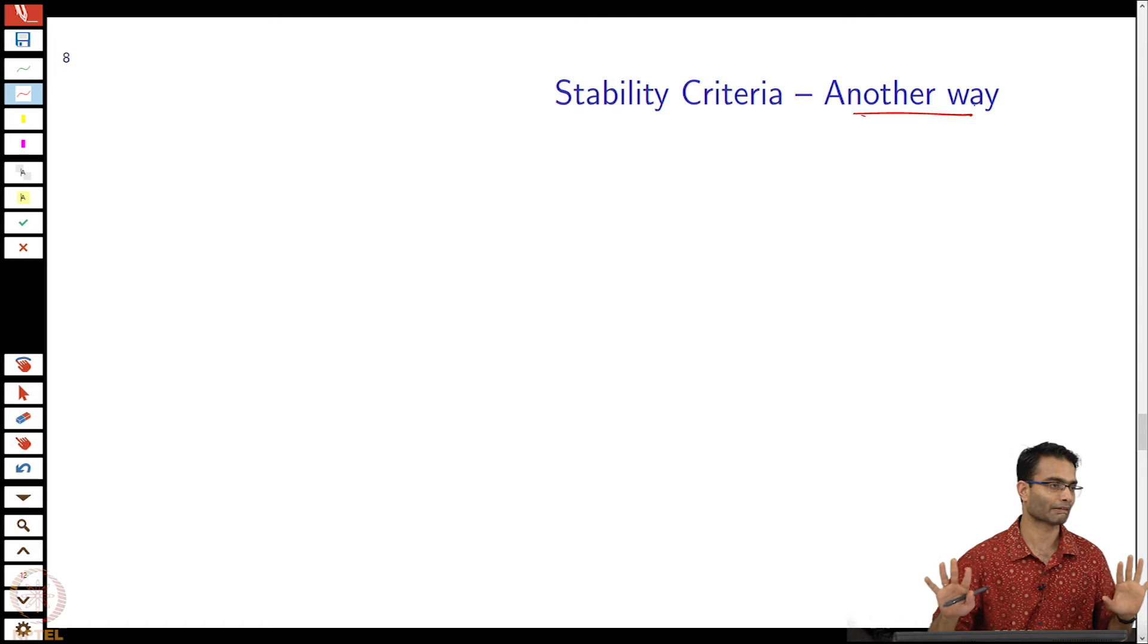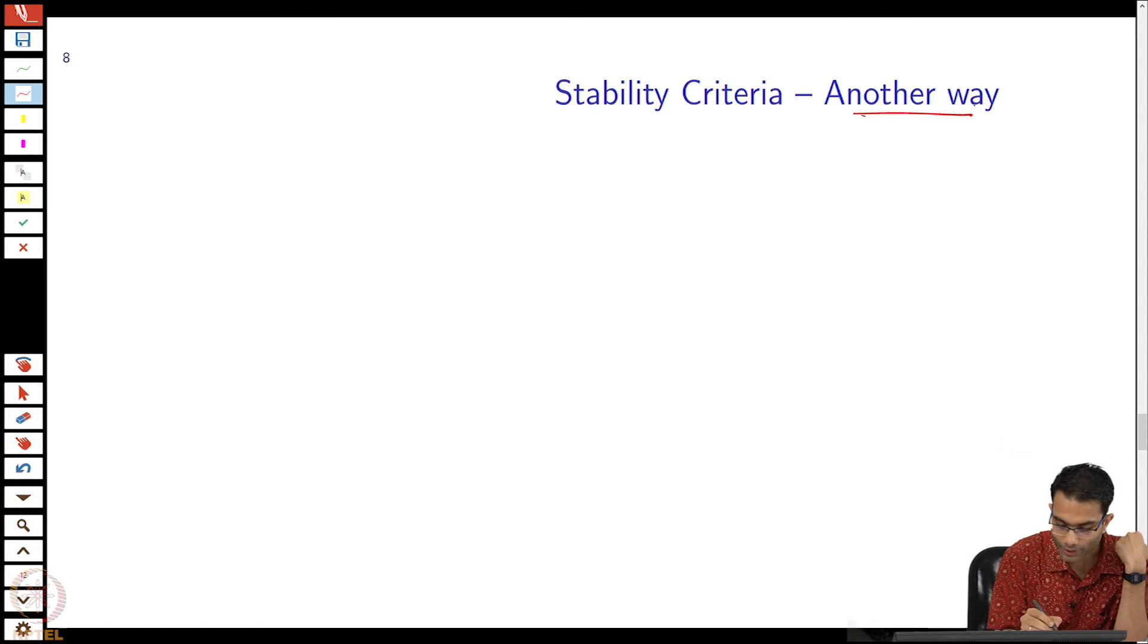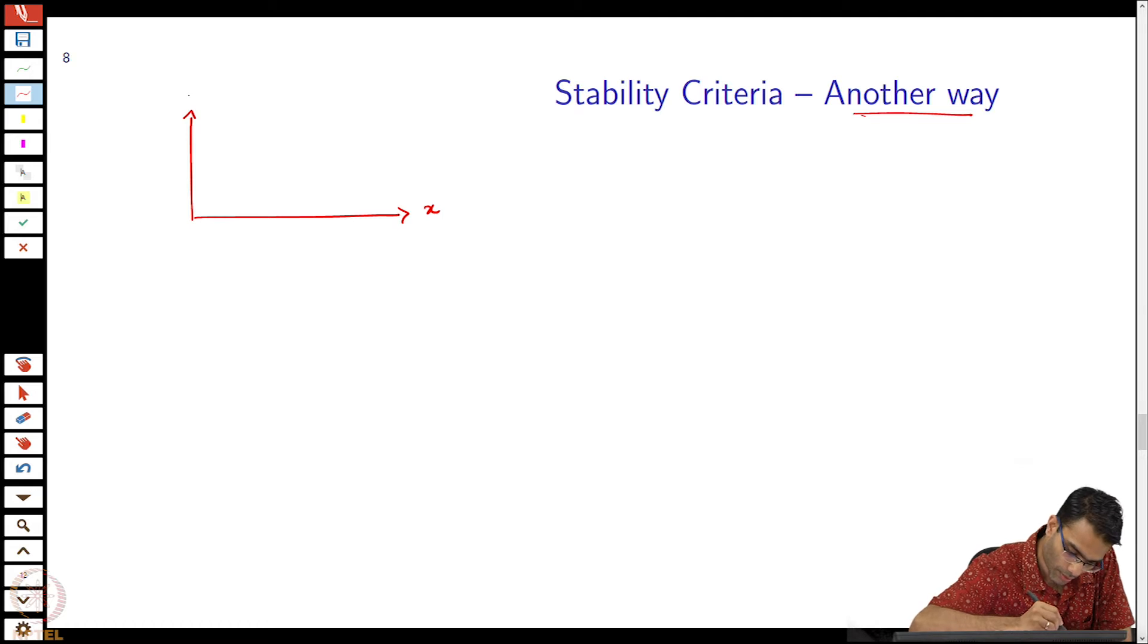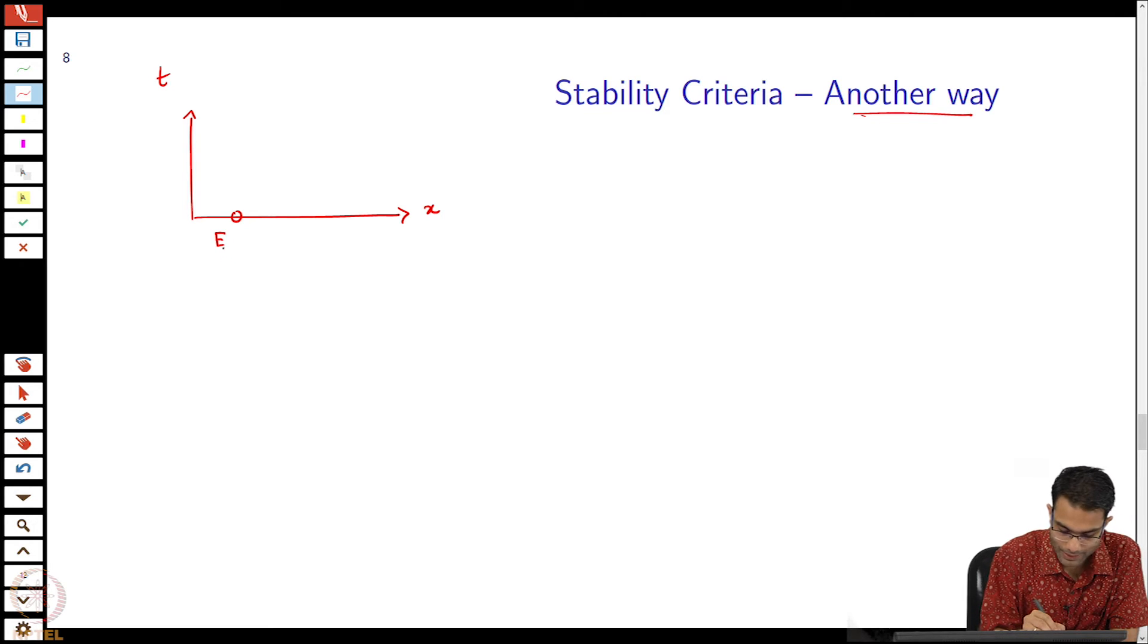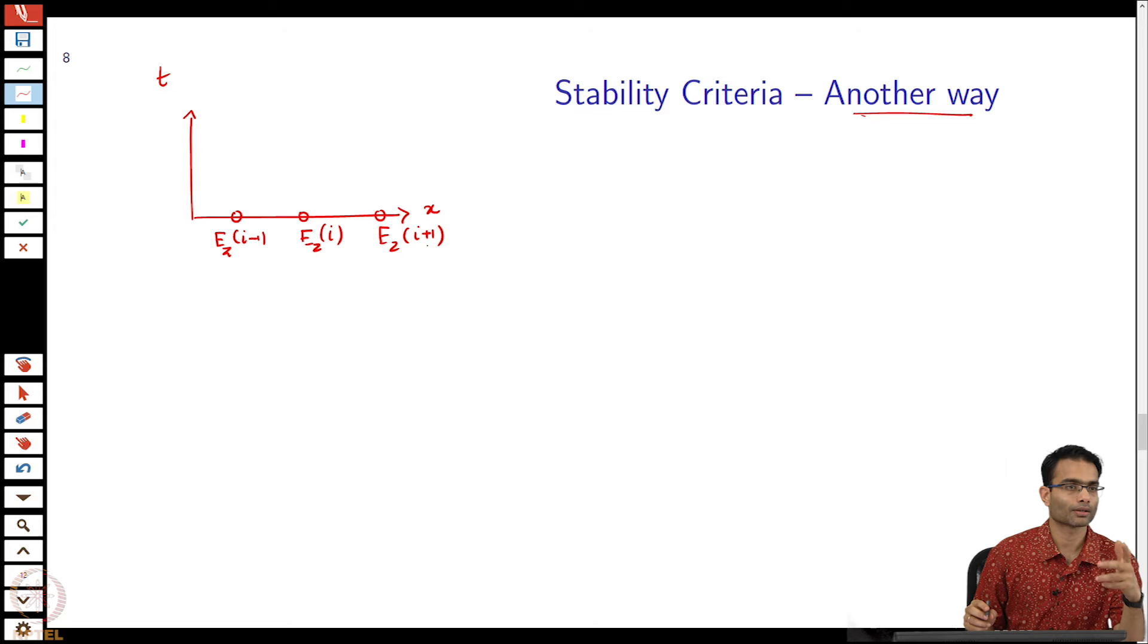I will draw a simple 1D grid. Our leapfrog scheme is what we have been talking about. This is my space and this is my time. On this I am considering this is my Ez i minus 1, this is my Ez i, this is my Ez i plus 1. What other variables are needed? E and H.